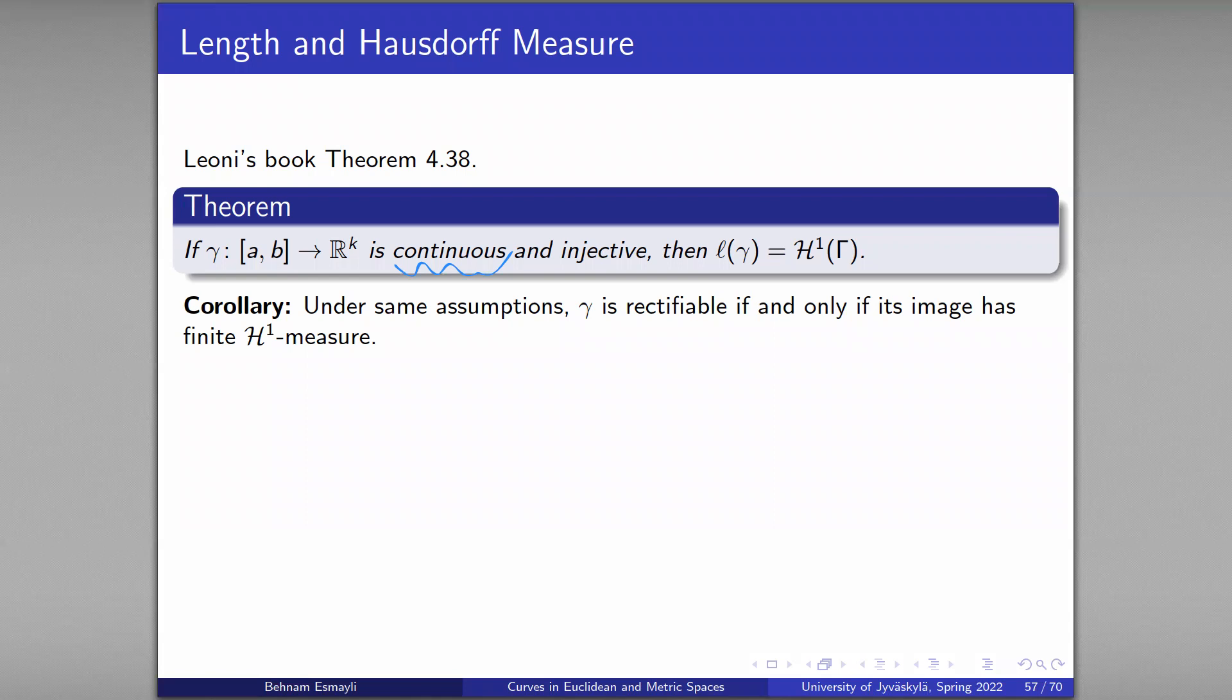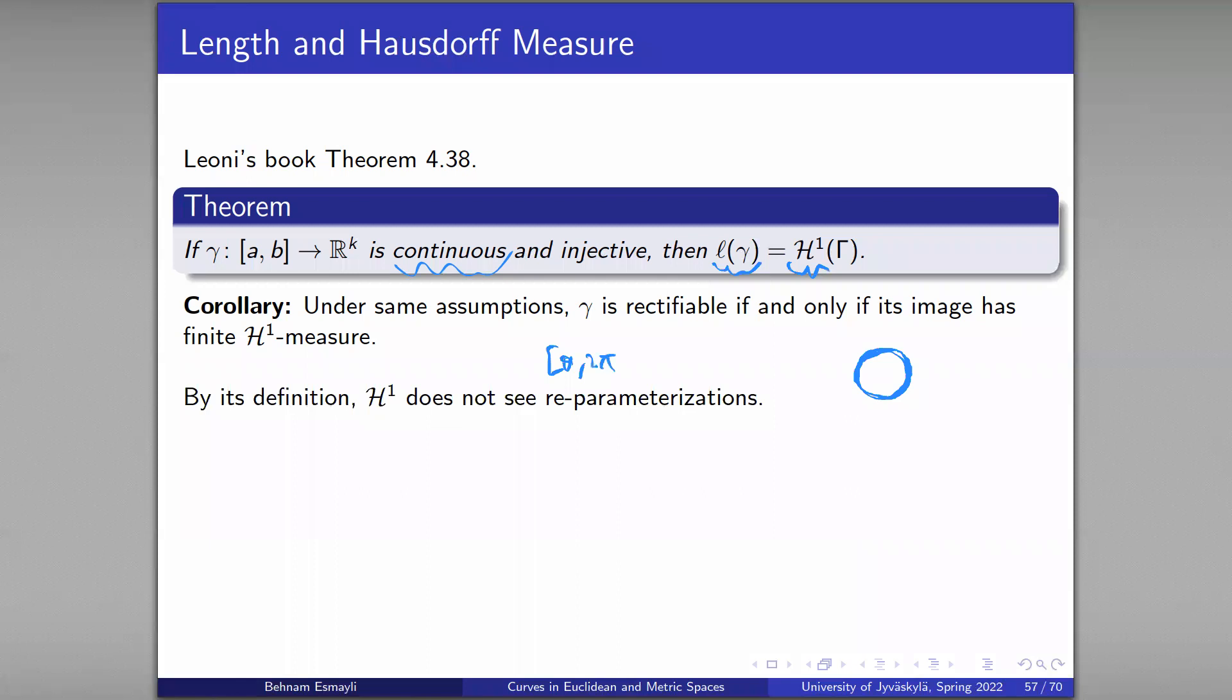The necessity of injectivity is seen from the fact that H^1 is defined for a subset and it does not see any reparameterization and it also doesn't see overlaps. If you travel the circle twice or 10 times, H^1 doesn't see that. H^1 only sees the image, the set. Length, on the other hand, sees the parameterization. In computation of length it matters, but with H^1 it won't matter. That's why injectivity is sort of necessary.